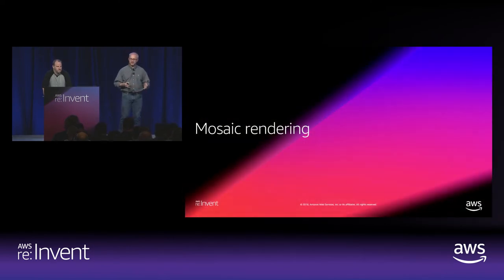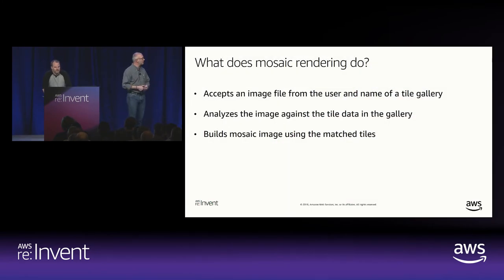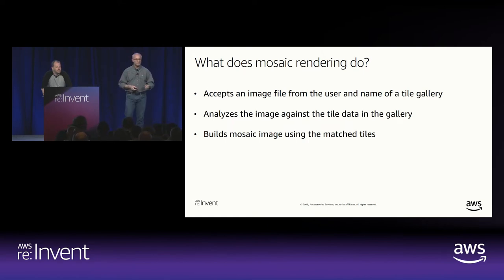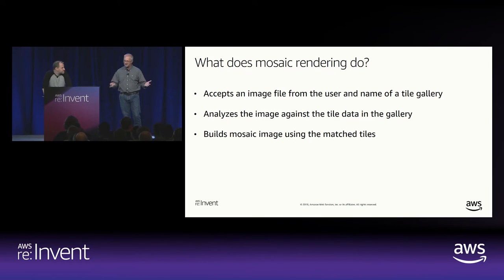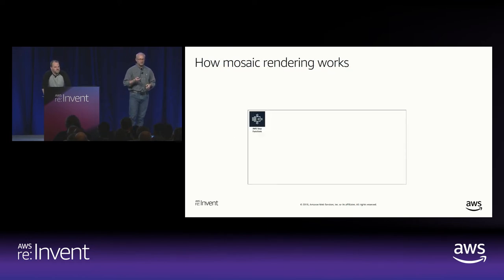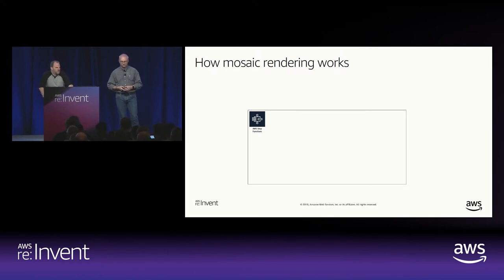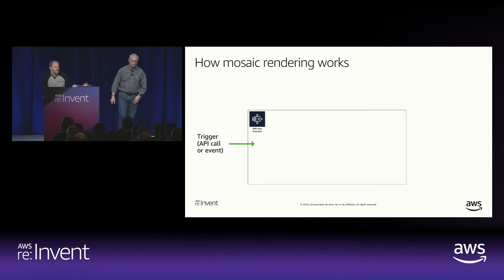Now that the tile gallery ingestion subsystem is ready, we need to think about mosaic rendering. In this subsystem, we want to take an image from the user — imagine they're logged into the website uploading something — and the name of a tile gallery they've created. Then analyze the image against the tile data in the gallery to pick out the right tiles, and rebuild the image as a mosaic. It's pretty simple steps, and Norm chose to use Step Functions for this.